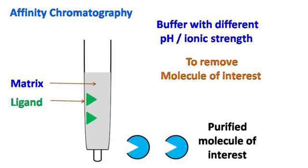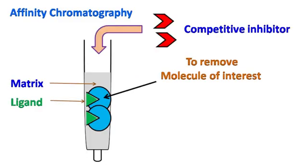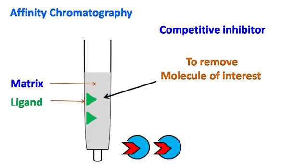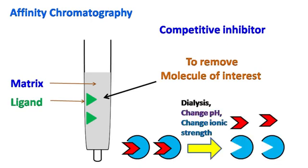The molecule of interest can also be detached from the ligand by using a competitive inhibitor. The competitive inhibitor can further be removed by dialysis or by changing the pH or the ionic strength.